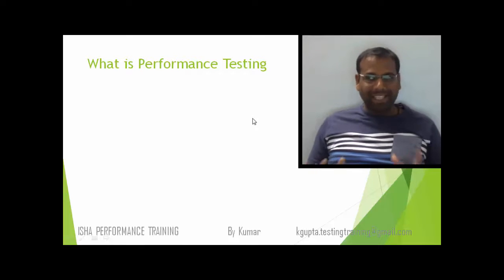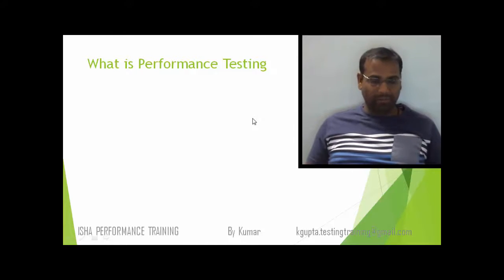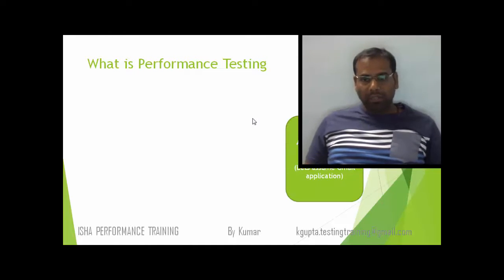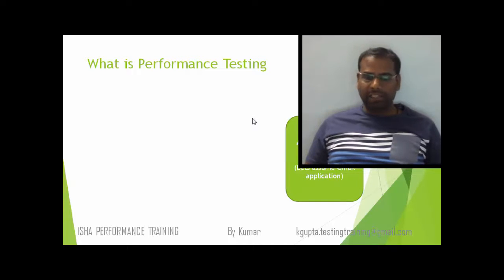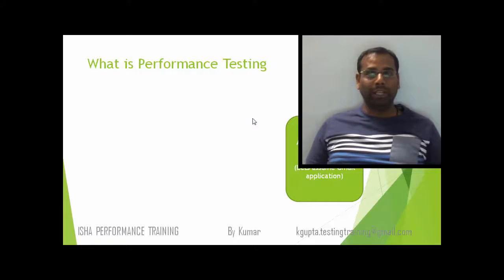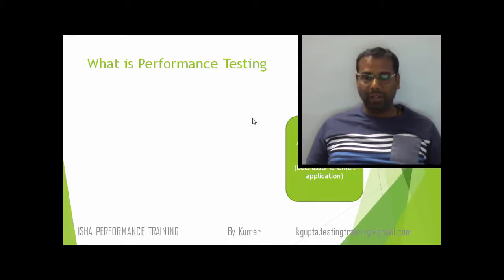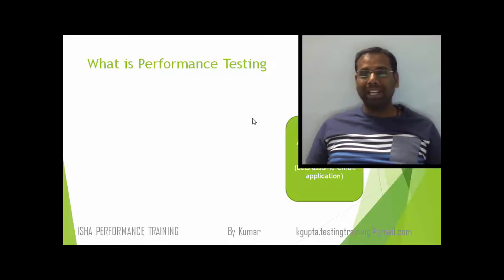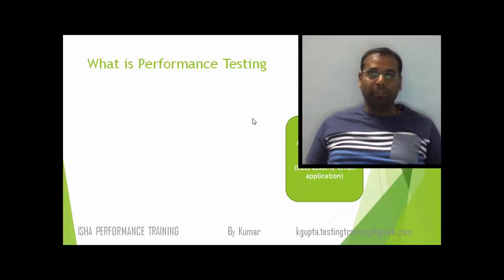Now let's see what exactly performance testing is. Let's consider any application — let's say our application under test is Gmail. There is a terminology for that: we call it AUT or SUT. SUT is called system under test, AUT is application under test. Both mean the same thing — the application that you are actually testing or about to do performance testing on.